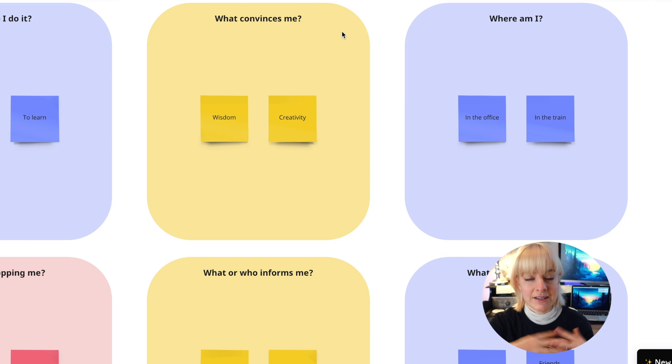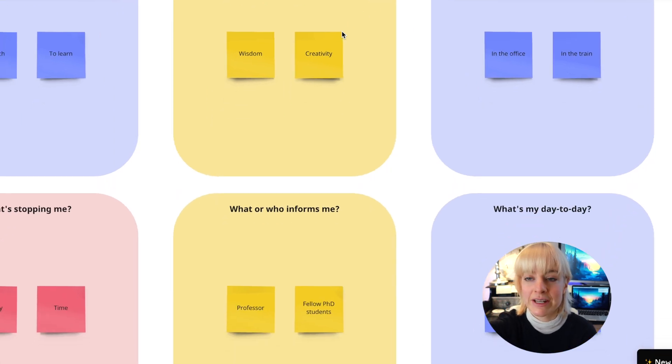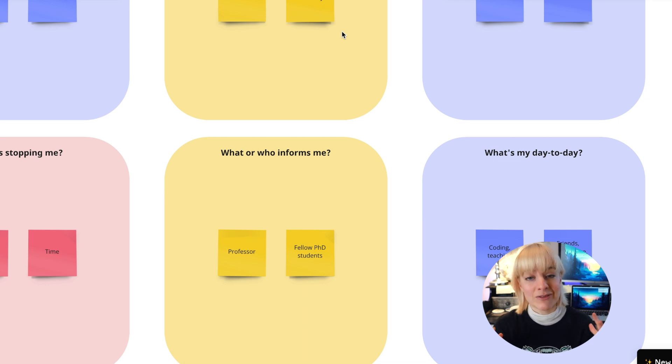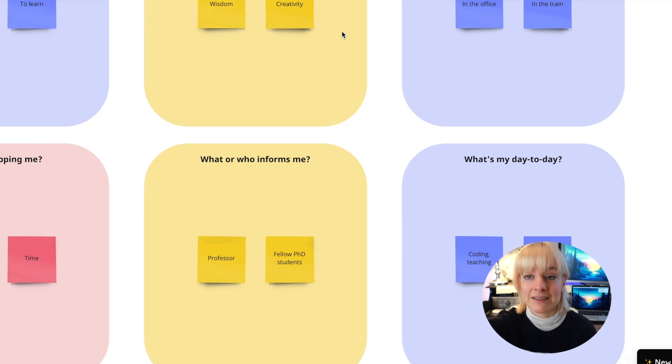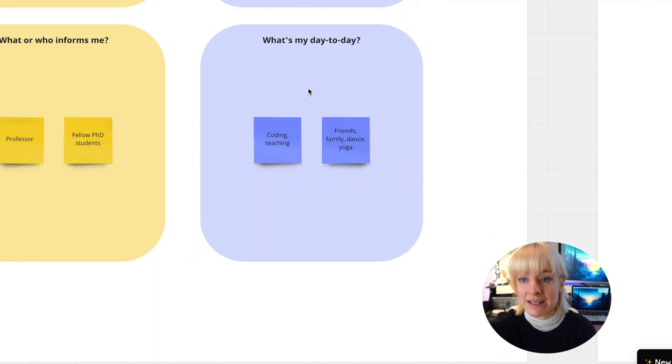When I decide to take on certain projects, I usually pick based on whether they follow the values of wisdom or creativity — and I do think these are intertwined. Who informs me? That's definitely my professor and fellow PhD students. Where am I? Usually in the office or on the train. My day-to-day includes coding, teaching, friends, family, dance, and yoga. You don't have to use this board — pen and paper works too. But thinking about your strengths, your daily life, and who guides you is a great way to pinpoint weaknesses and accelerate your learning.